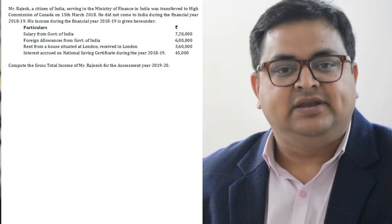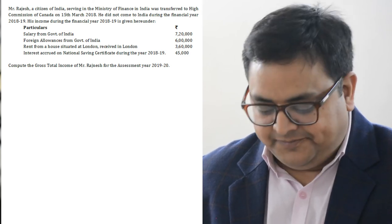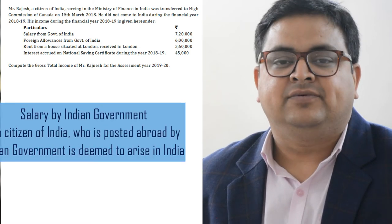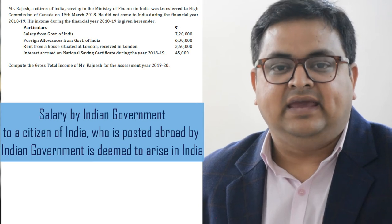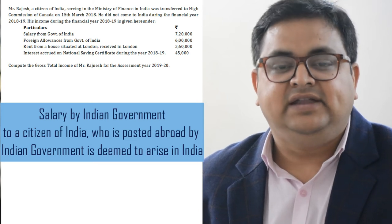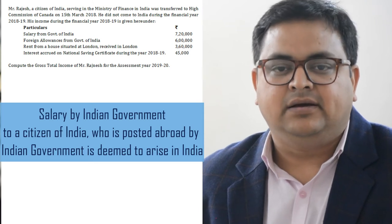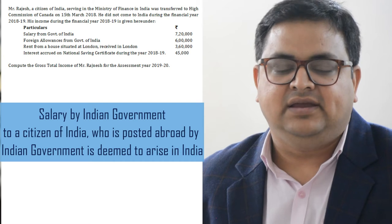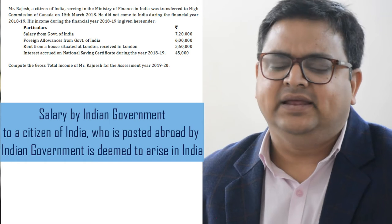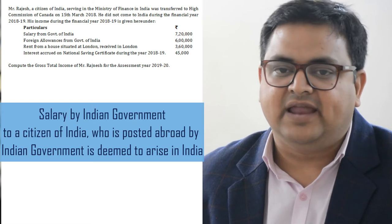Toh yahaan par diya gaya hai inki kuch income ke baare mein. His income during financial year 18-19 is as under. Salary from Government of India: 7,20,000. We know that if the person is an Indian citizen, any salary provided by the Indian government to that Indian citizen is deemed to arise in India. Although he is working in Canada right now, but this income is deemed to arise in India - that is Section 9 of the Income Tax Act. So this income of 7,20,000 is taxable.